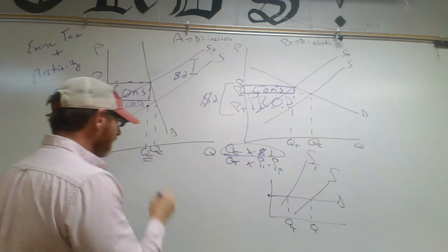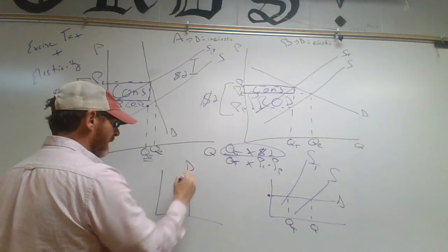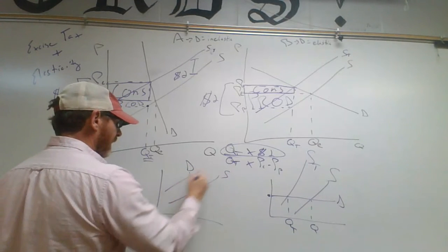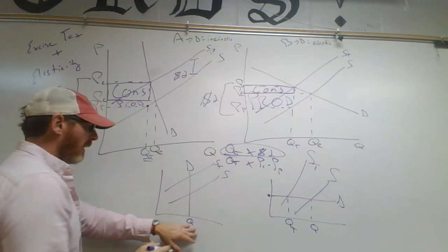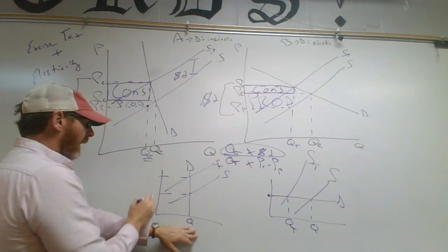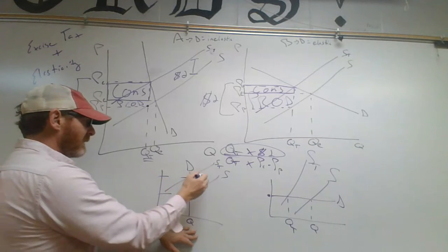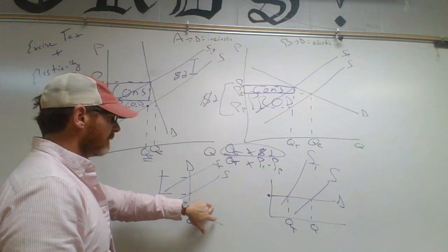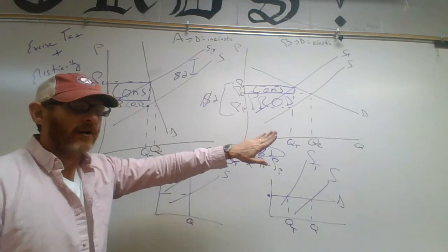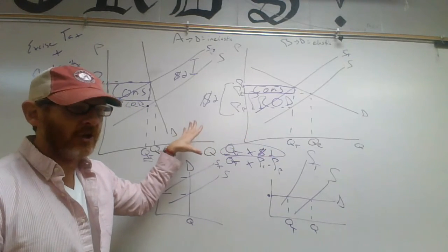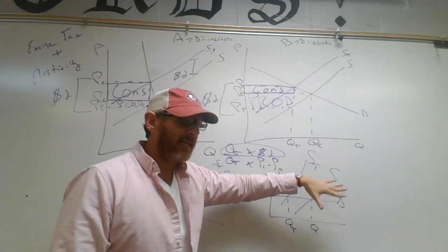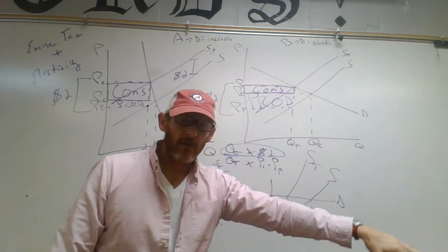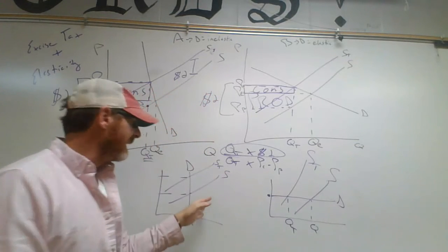If it's perfectly inelastic — here's the demand curve, the supply curve, and the new supply curve with the tax — the quantity doesn't change at all, but the price does. This price increase would be the exact same amount as the tax. So if it's perfectly inelastic, the entire cost of the tax goes onto the consumer. If it's perfectly elastic, the entire cost goes onto the producer.